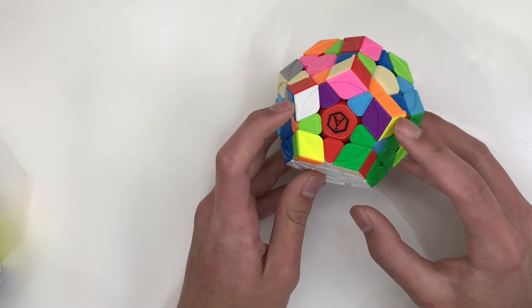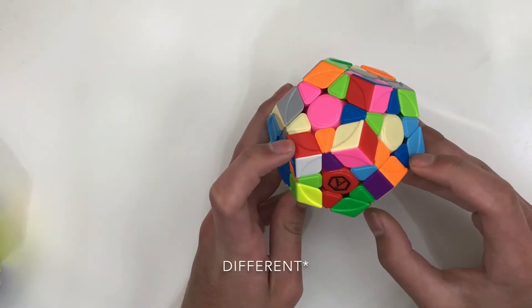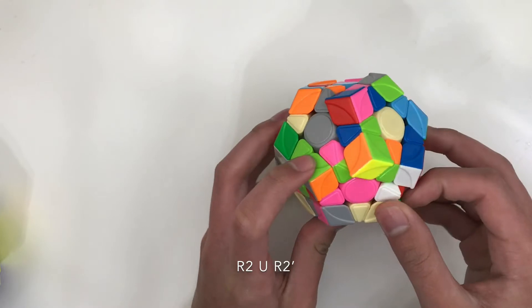If your pieces are here and here, and these two colors are opposite, you can do an R2, and then U, R2'.